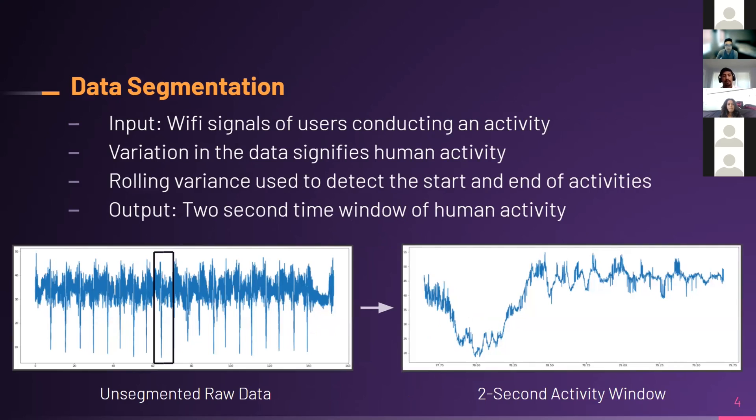For our first step in our procedure, we first need to segment the data. Our input would be the CSI measurements, taking in Wi-Fi signals of users conducting activities. However, we only want to extract the part where that user is actually performing the activity so we can feed that into our deep learning model. From past experiments, we know that variation in data signifies human activity. So we employ a rolling variance to detect the start and end time of activities. This means we take a look at specific chunks in our unsegmented raw data, measure how spread out the data is, find which chunk has the most variance, and use that as our focal point for a two-second time window.